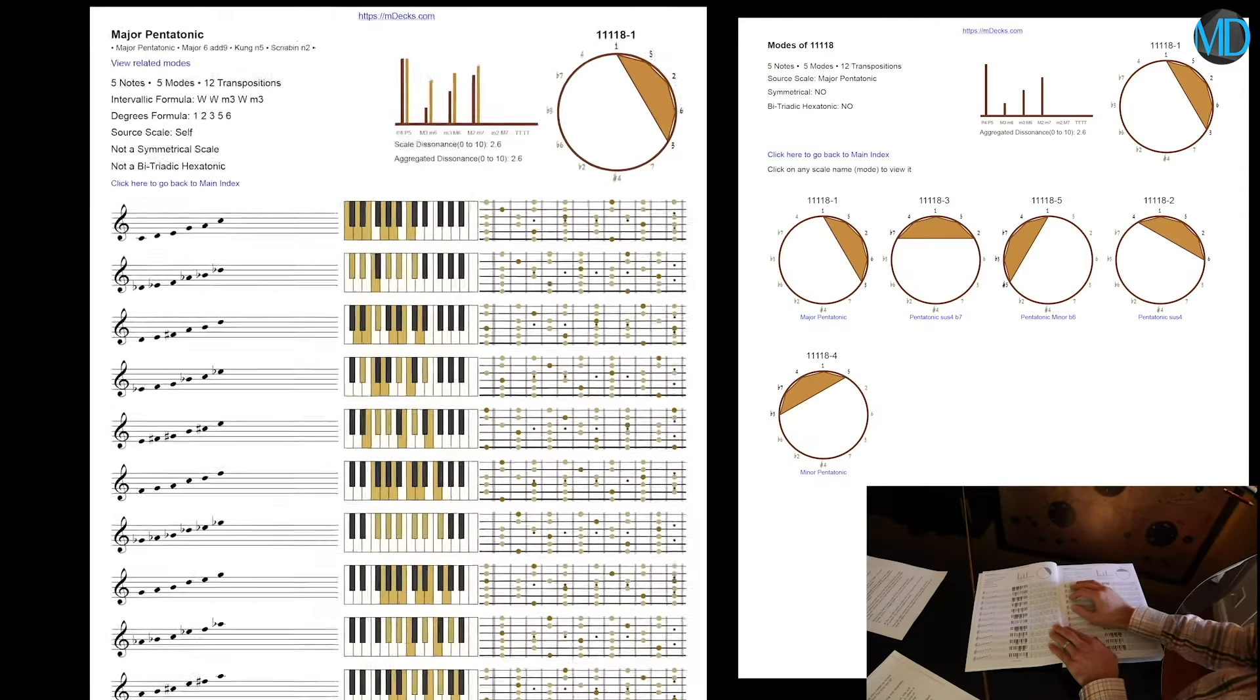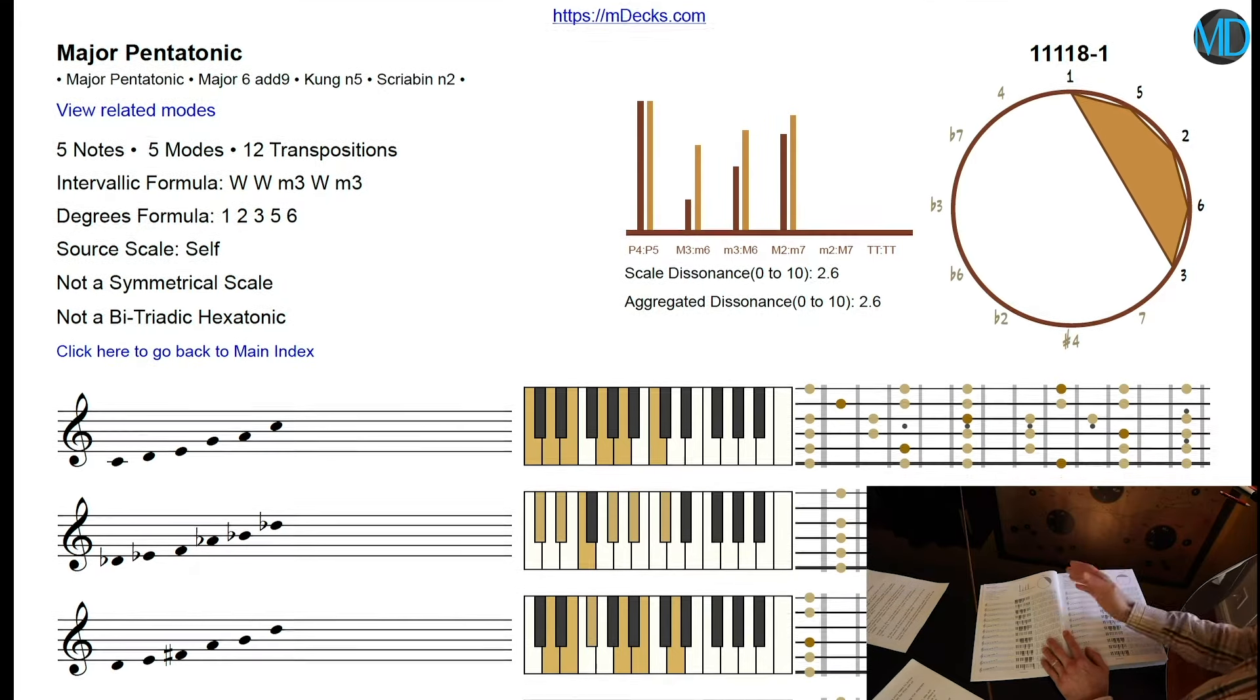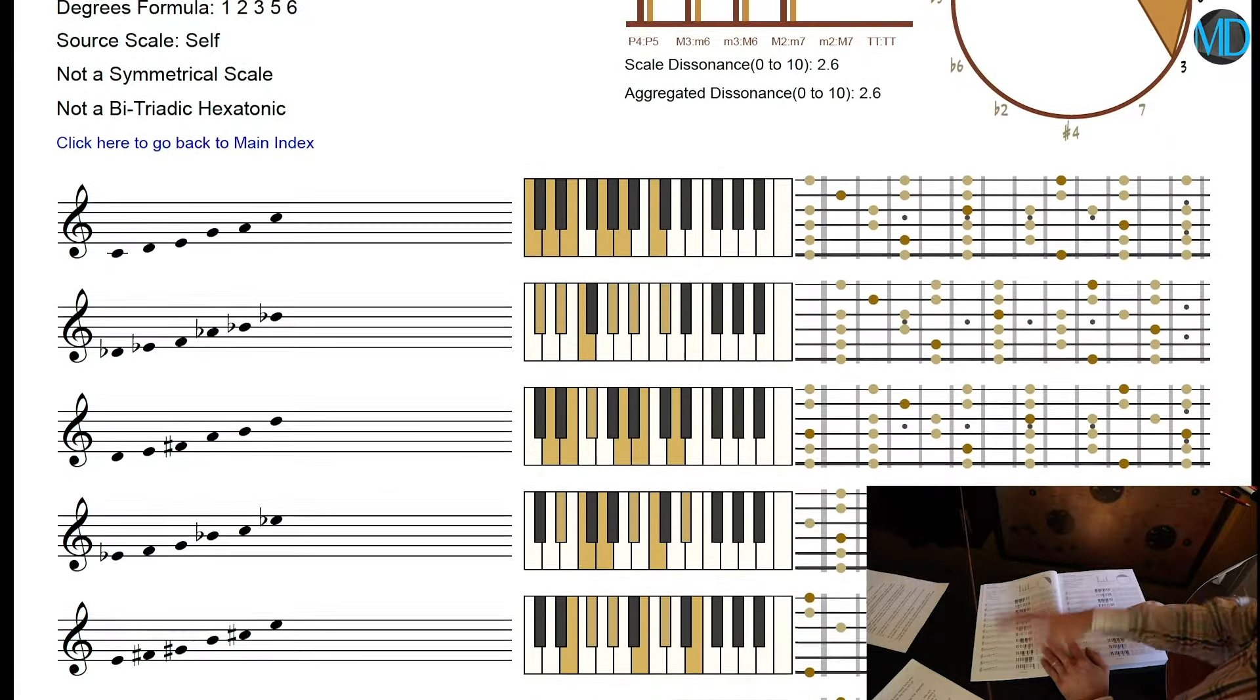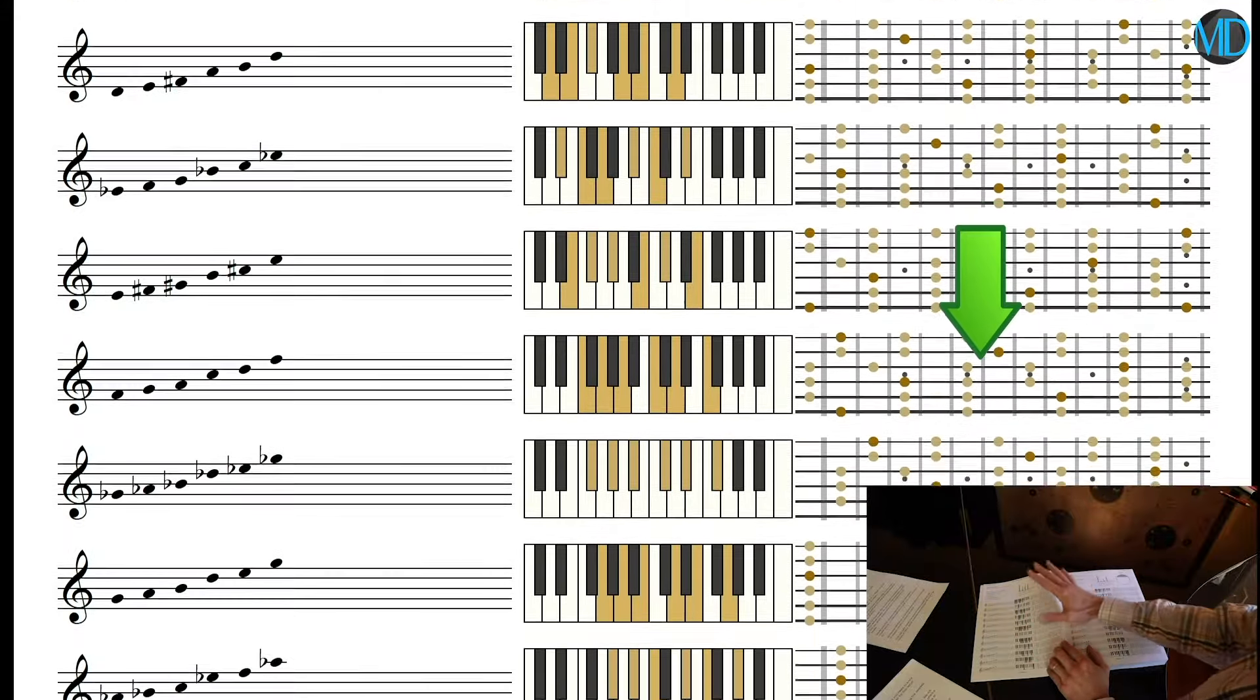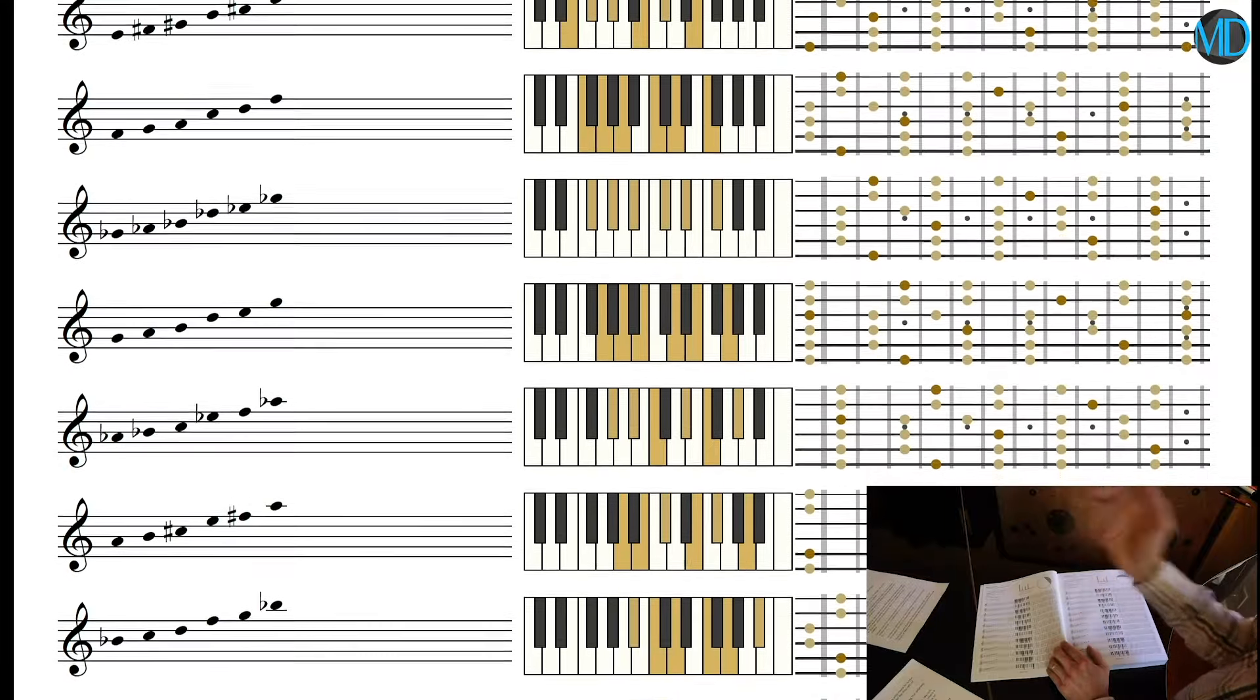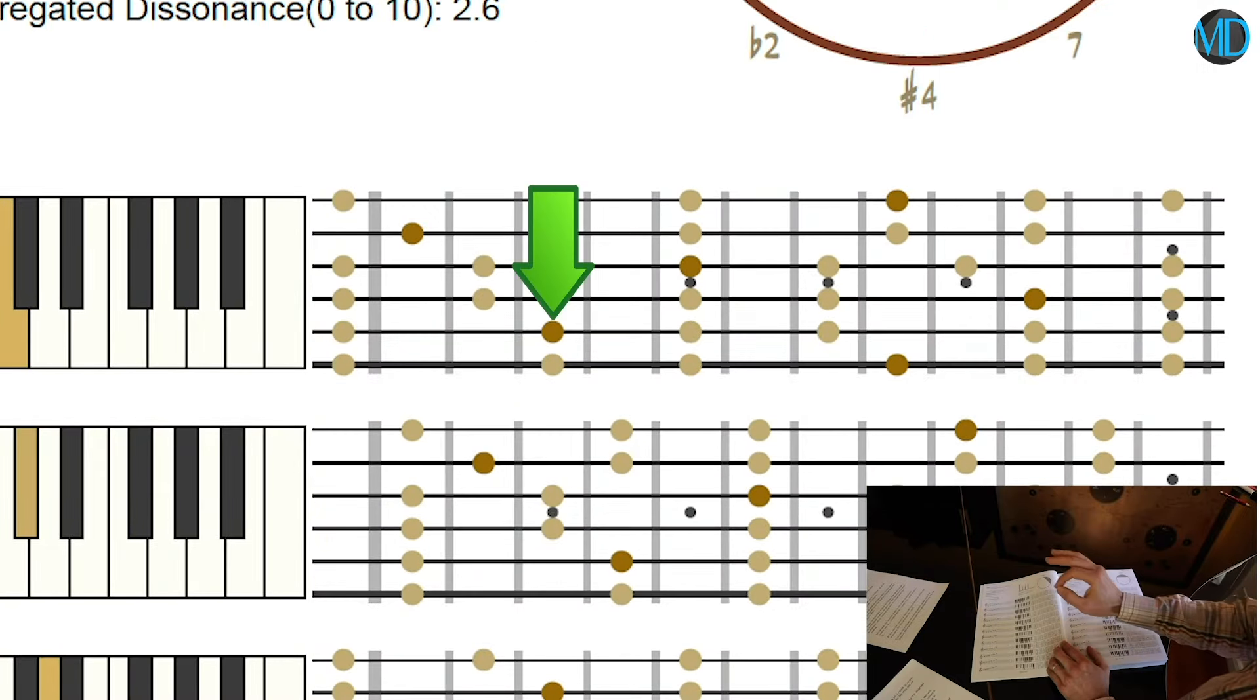So, here on this page is the source scale, the major pentatonic. In this format, our scale page format, you can see the scale written down in all keys with music notation, also superimposed over a piano keyboard and a guitar fretboard. With this information, you can play the scale in any key by reading the music or see it on a piano keyboard or a guitar fretboard. By the way, in the guitar fretboard, the roots are shaded with a slightly different color so you can distinguish them from other degrees that are in the scale.